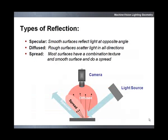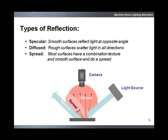There are three basic types of reflections: specular, diffuse, and spread. A smooth mirror-like surface reflects light away from a camera in a specular fashion. A rough texture scatters light back toward a camera in a diffuse fashion. A combination of both effects is referred to as a spread reflection.